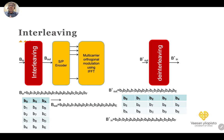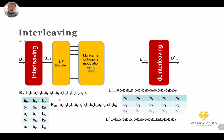The problem is that usually the probability of a bit being received in error is small when it depends only on additive noise. The probability of having more than one bit error in one packet is much smaller than a single bit error, and having two bit errors is much smaller than three, and so on. This is the normal case with only additive noise or interference. However, in some cases in a wireless channel we might also have impulsive noise.